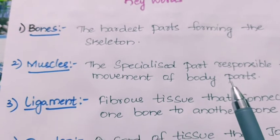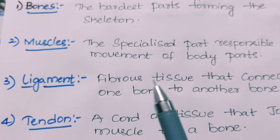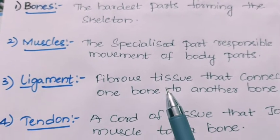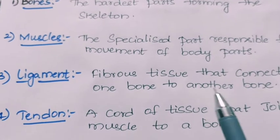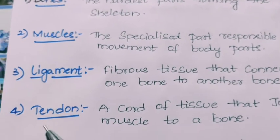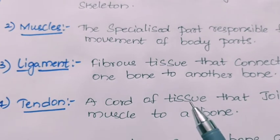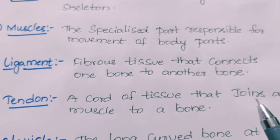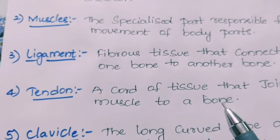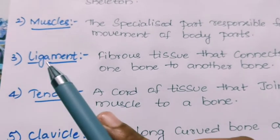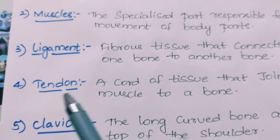Next, ligament. Ligament is the fibrous tissue that connects one bone to another bone. Next, tendon. Tendon is a cord of tissue that joins a muscle to a bone. Don't confuse these two: ligament joins one bone to another bone, while tendon joins a muscle to a bone.